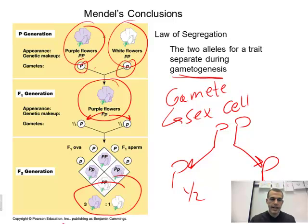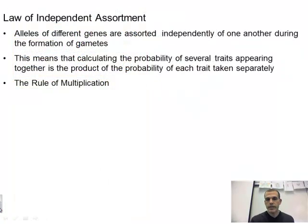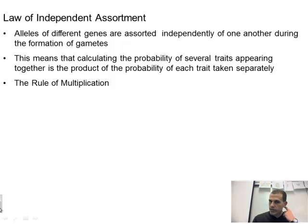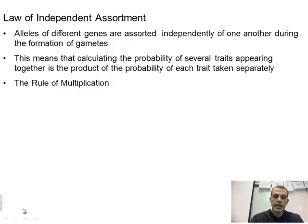The next law is the law of independent assortment. This basically states that alleles of different genes are assorted independently of one another during the formation of gametes.